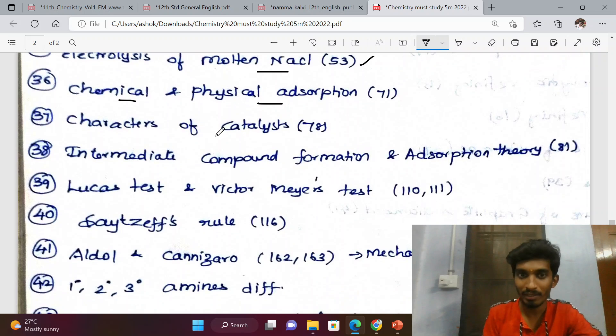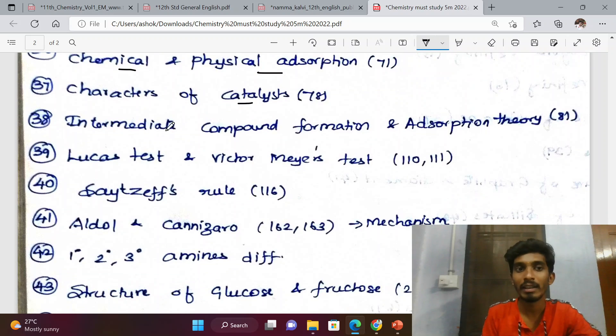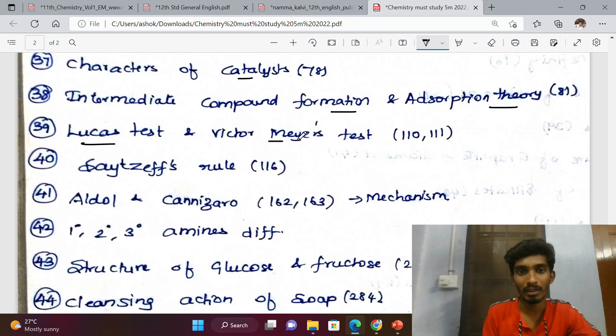Chemical and physical adsorption difference, characteristics of catalyst, intermediate compound formation theory and adsorption theory - 3 marks or 5 marks. Lucas test and Victor Meyer test - 3 marks.